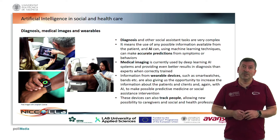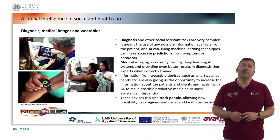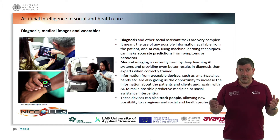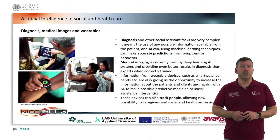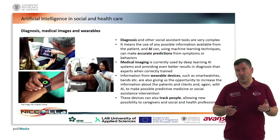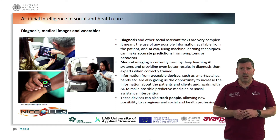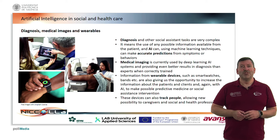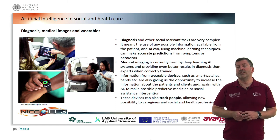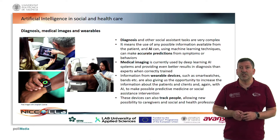Diagnosis, medical images, wearables — diagnosis and other social assistance tasks are very complex, requiring the use of any possible information available from the patient. AI can, using machine learning techniques, make accurate predictions from symptoms or behaviors. Medical imaging is currently used by deep learning AI systems, providing even better results in diagnosis than experts when correctly trained. Information from wearable devices such as smartwatches and bands is also giving us the opportunity to increase patient and client information, and with AI, make predictive medicine or social assistant interventions possible. These devices can also track people, allowing new possibilities for caregivers and social and health professionals.